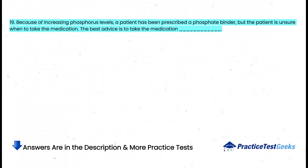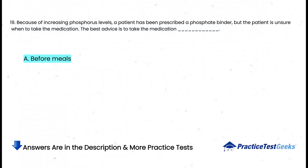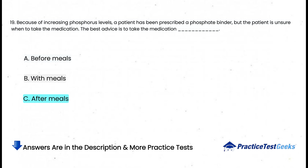Because of increasing phosphorus levels, a patient has been prescribed a phosphate binder, but the patient is unsure when to take the medication. The best advice is to take the medication: a. Before meals, b. With meals, c. After meals, d. Before bedtime.